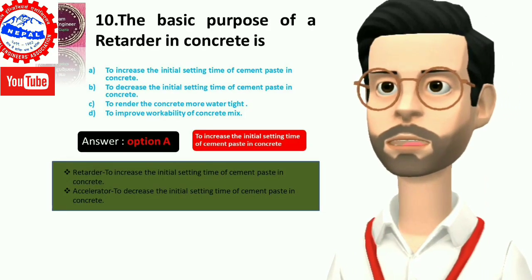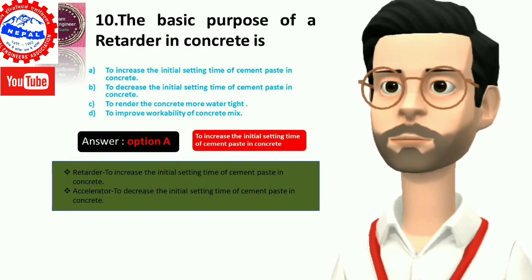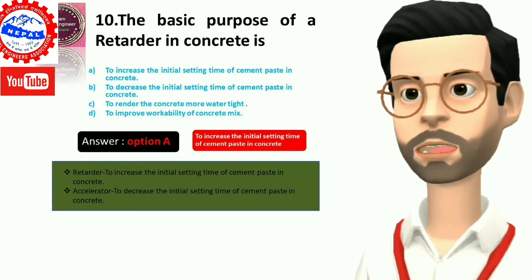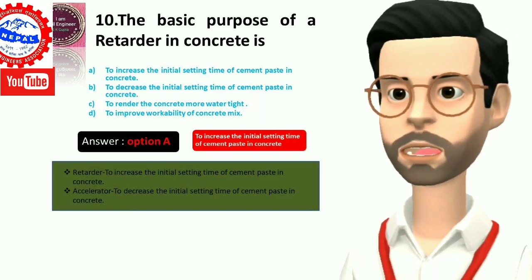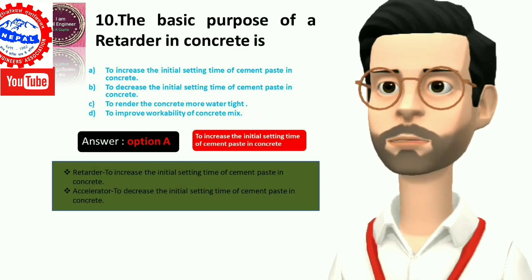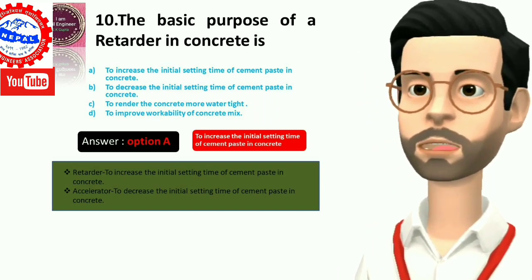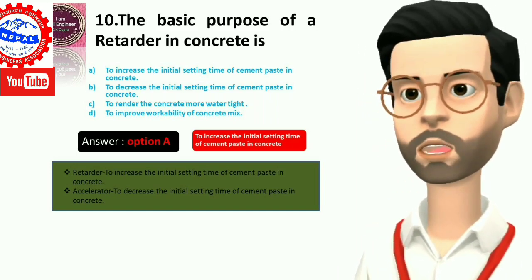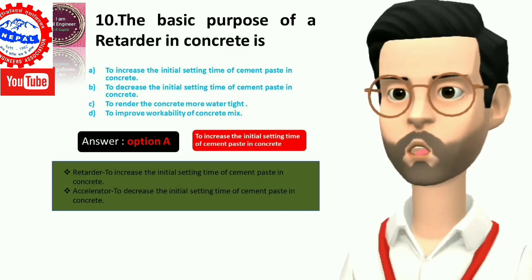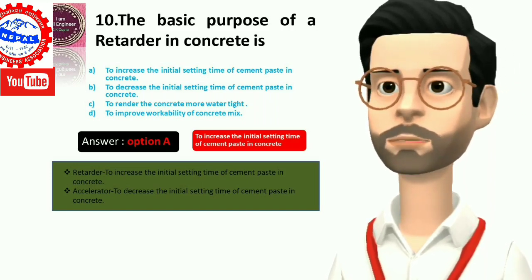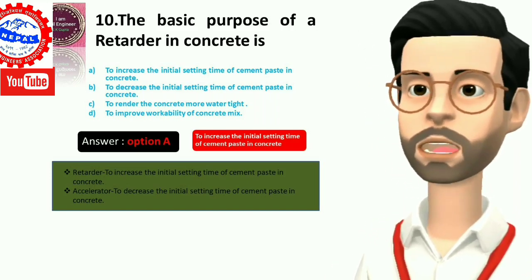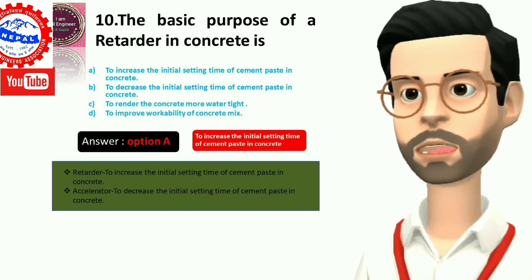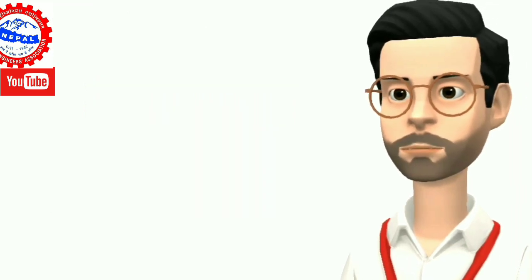Ten, the basic purpose of a retarder in concrete is: A) to increase the initial setting time of cement paste in concrete, B) to decrease the initial setting time of cement paste in concrete, C) to render the concrete more watertight, D) to improve workability of concrete mix. Answer is option A, to increase the initial setting time of cement paste in concrete.